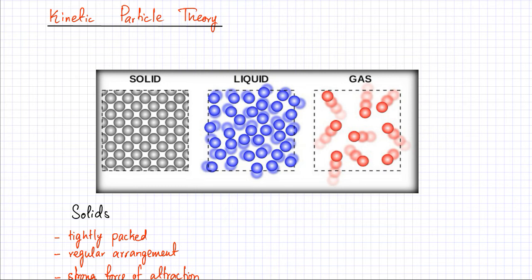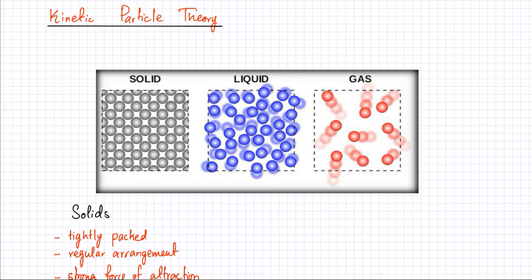Just think of matter as particles. And there are three different states in which particles could exist: one is a solid state, the other one is a liquid state, and the third is gaseous state.